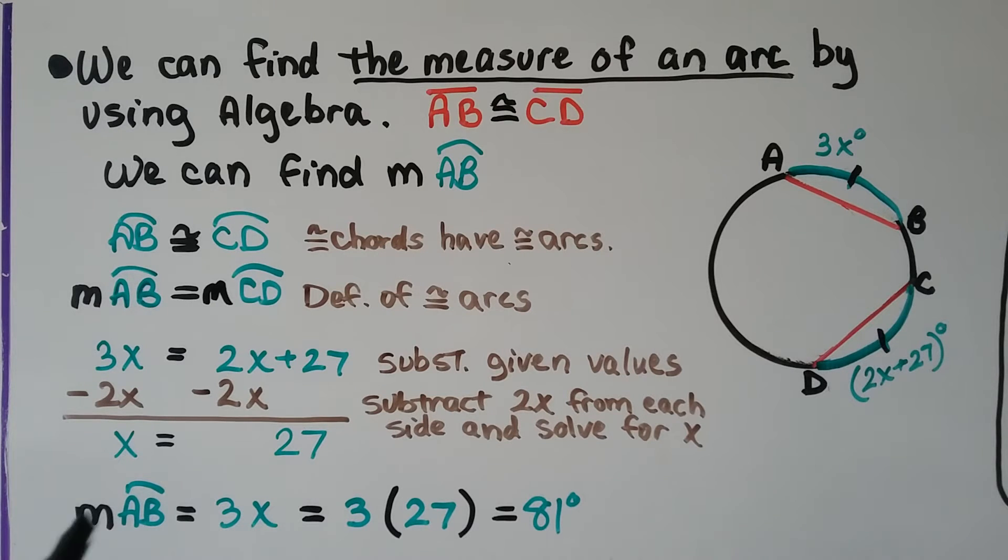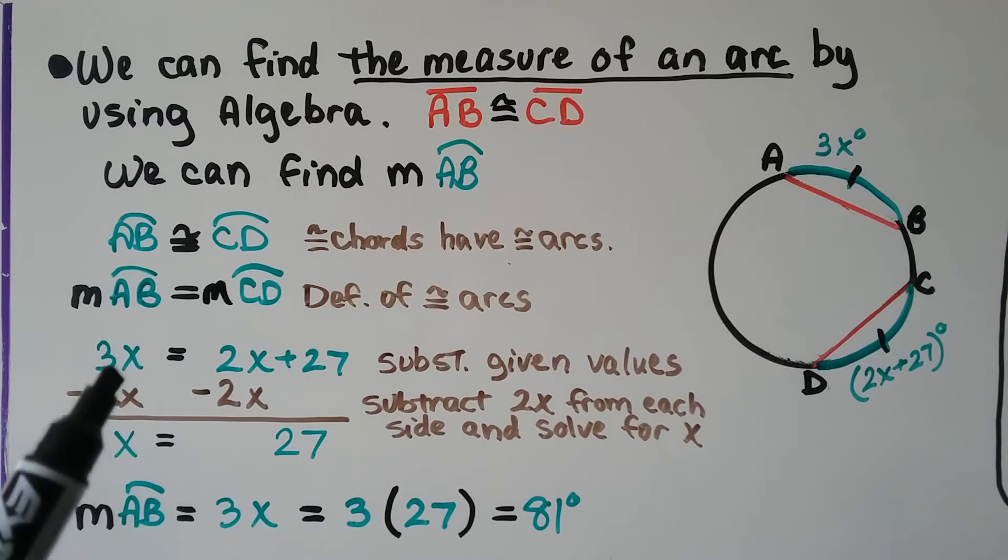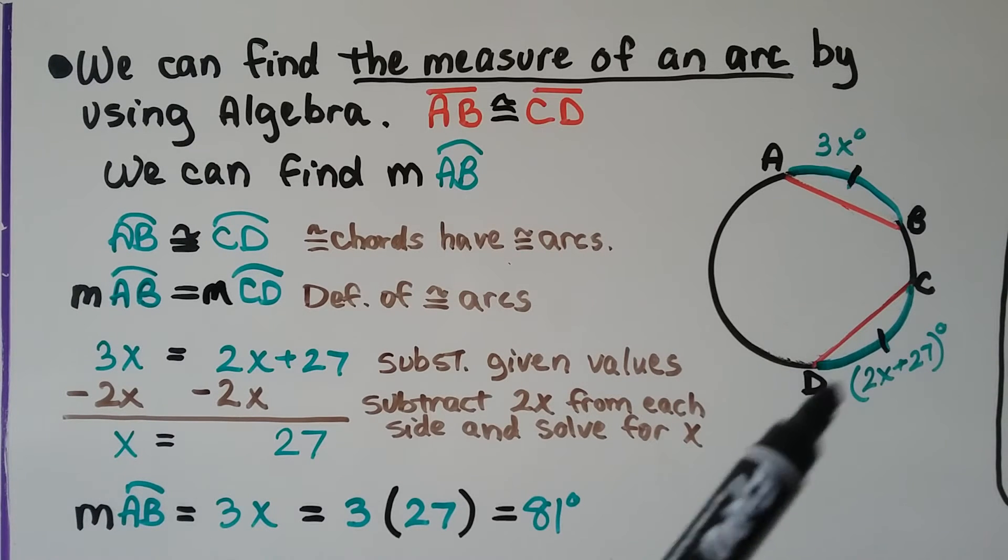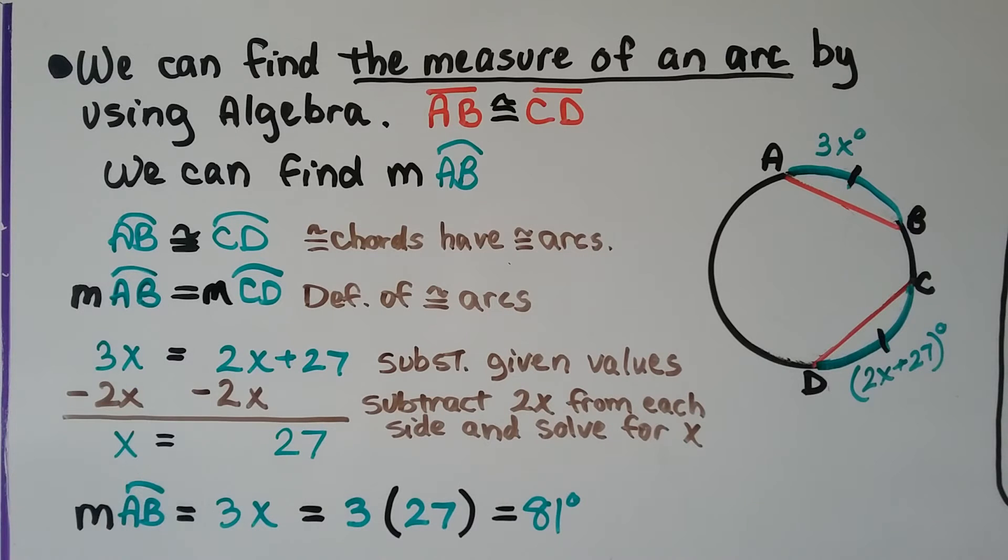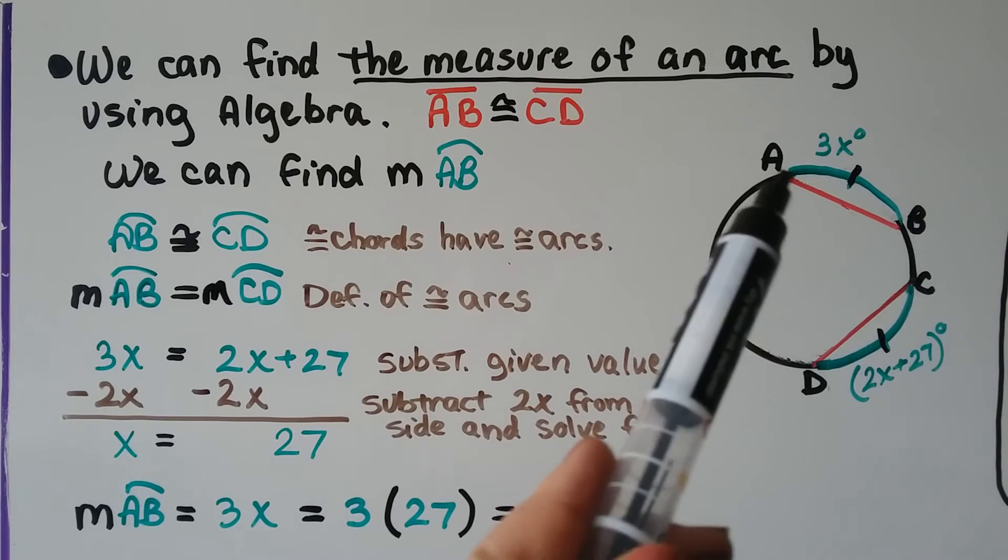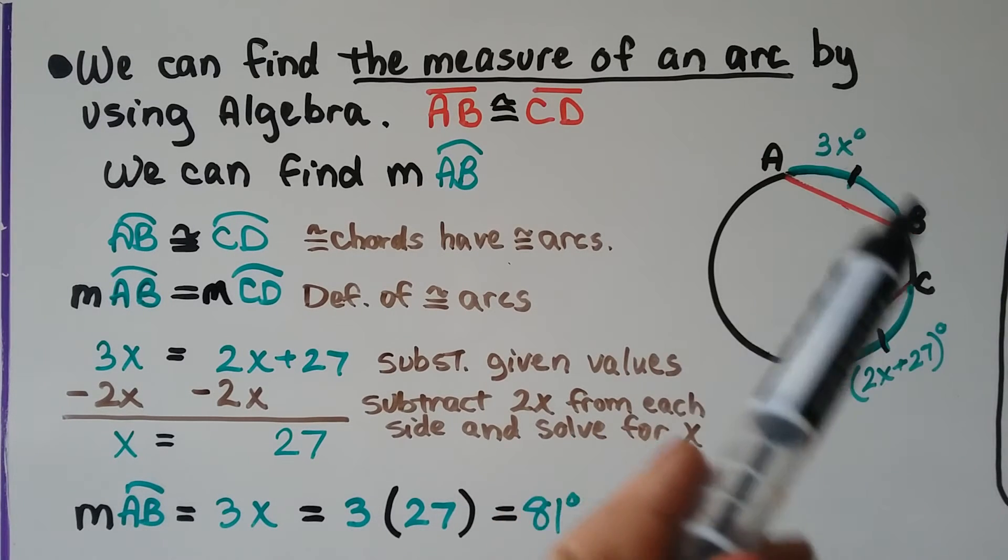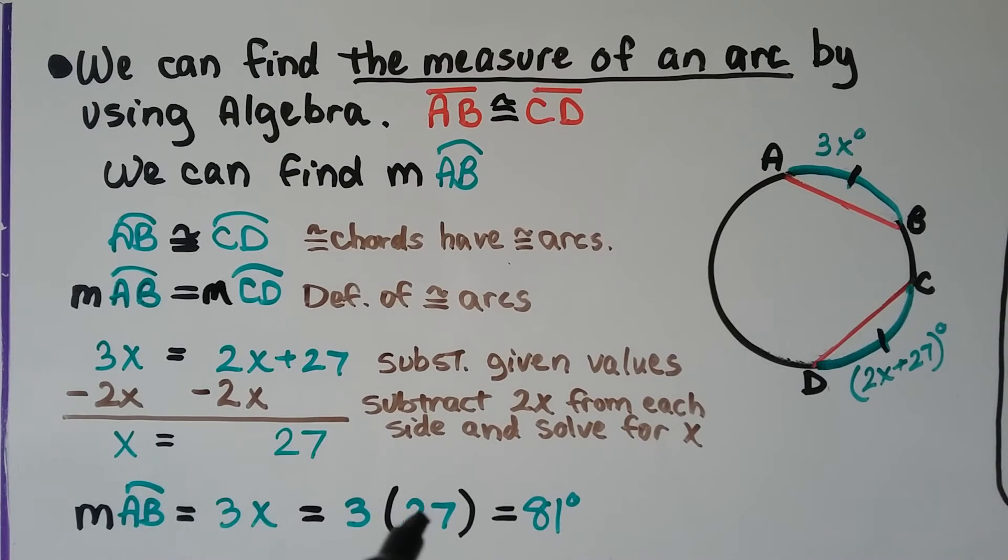And, substituting in our given values, for arc AB we have 3x, and for arc CD we have 2x plus 27. We write them in, and we can subtract 2x from each side and solve for x. That gives us 1x is equal to 27. Well, if arc AB is 3x degrees, then it's 3 times 27. It's 81 degrees.